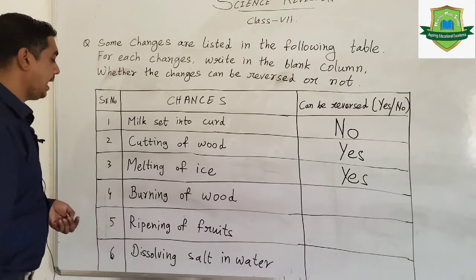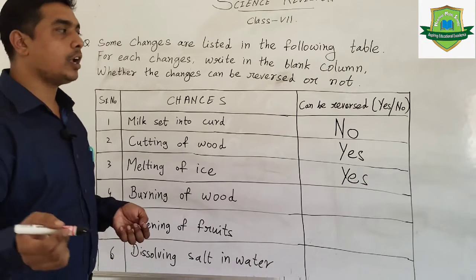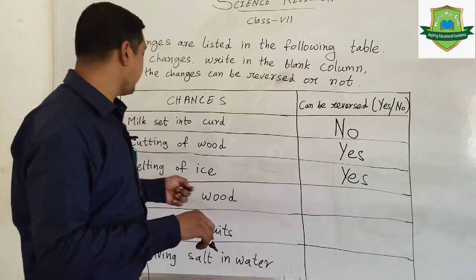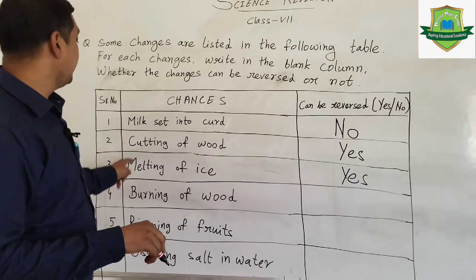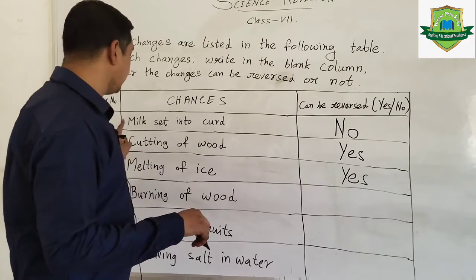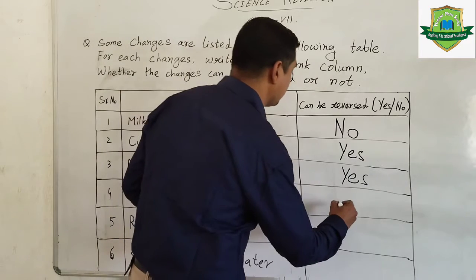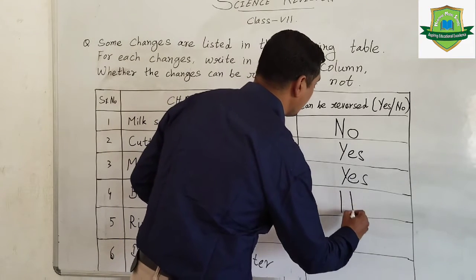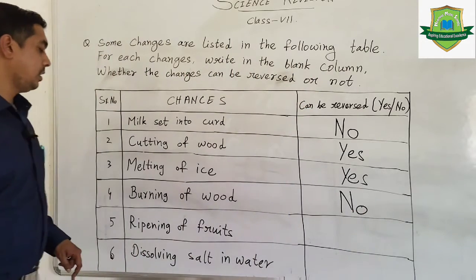Fourth one: burning of wood. As I told you, burning of wood you cannot reverse. That's why I wrote it down here — burning of wood and cutting of wood, don't be confused between these two. Burning of wood, I cannot reverse. Can it be reversed? No, we cannot reverse it.